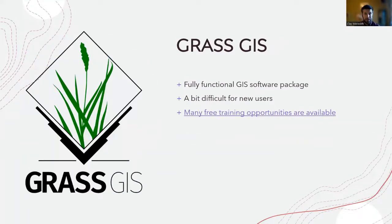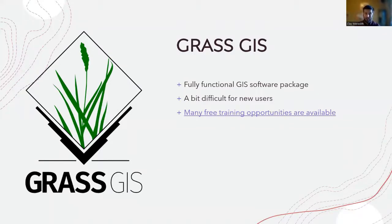Another option is GRASS GIS — a fully functional GIS software package with a user interface that works really well. There are free training opportunities available that will walk you through how to use this software as a basic user. It can be a little difficult for new users and is a bit more technical than some other platforms. If you're making lots of maps, doing lots of calculations, and working in a programmatic fashion, this might be a good option for you.